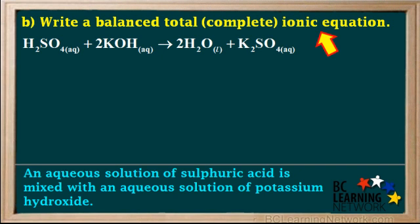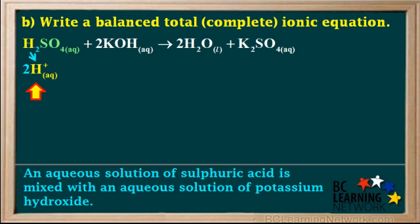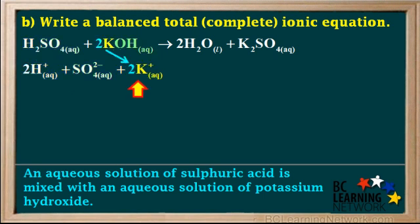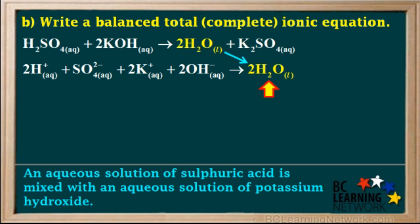In part B, we're asked to write a balanced total or complete ionic equation. To do this, we dissociate all the aqueous compounds into their individual ions and leave the liquid as it is. We start with the aqueous H2SO4 — it dissociates to give two H plus ions, which are also aqueous, and one SO4 2 minus or sulfate ion, which is also aqueous. When an aqueous compound is dissociated, both ions that it produces are aqueous. Dissociating 2KOH gives us two aqueous K plus ions and two aqueous OH minus ions. Remember that a coefficient of two in front of a compound means there are two of both ions present. The two water molecules are liquids — we bring 2H2O down to the total ionic equation without dissociating it. Liquids and solids in the formula equation are not dissociated; just copy them as written and bring them down.